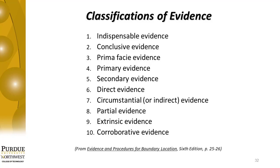Fourth is primary evidence — that which is most certain. The contents of a written document are more certain than the oral testimony of what the document contained. Fifth is secondary evidence, which is inferior to primary evidence — a copy of the original document is inferior to the original. Secondary evidence is used to prove the content of lost or unavailable primary evidence. Sixth is direct evidence — this proves a fact directly without resorting to presumptions or inference. For example, a witness testifies: I saw the surveyor drive the stake into the ground. Seventh, circumstantial or indirect evidence depends on inferences or presumptions that tend to prove a fact by proving another. For example, a witness testifies: I saw the surveyor drive similar stakes at other corners.